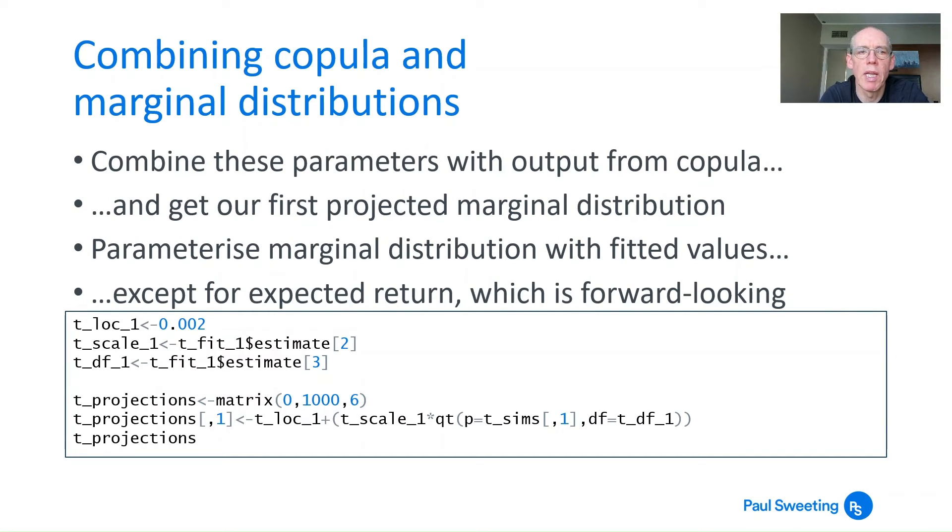We then need to combine the copula and marginal distributions to get our simulated returns. I'm just looking at the first column. This is something you could do for all six columns using a loop, similar to what we described when pulling data out of distributions initially. We can combine these parameters with the output from the copula and get our first projected marginal distribution.